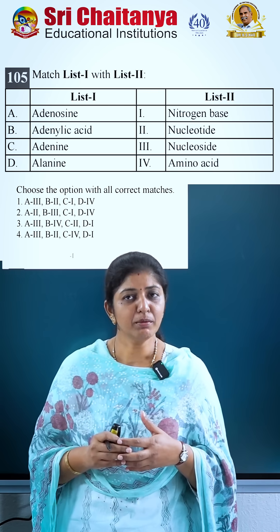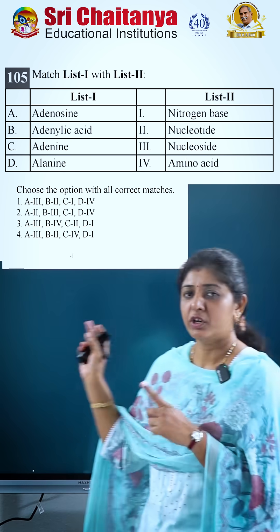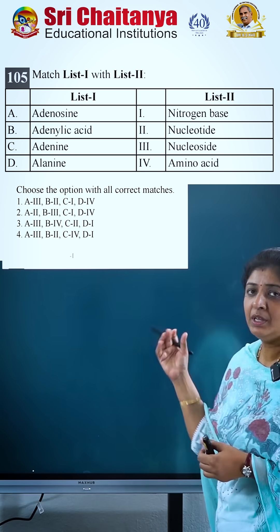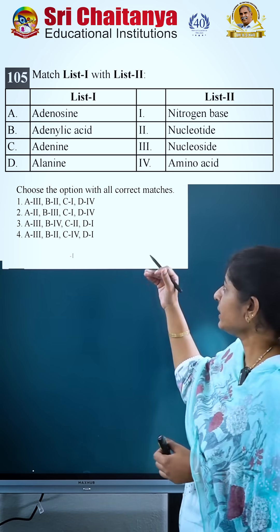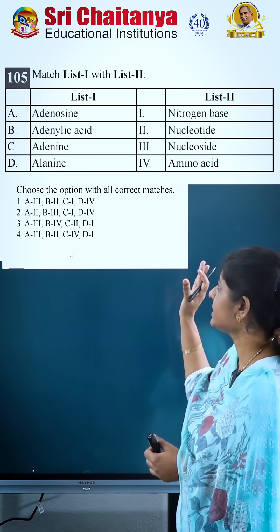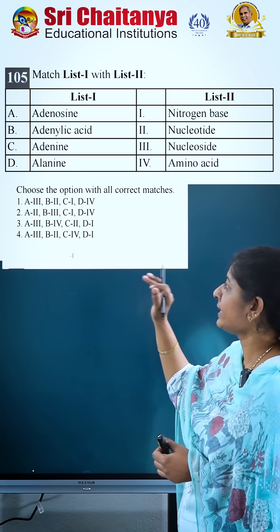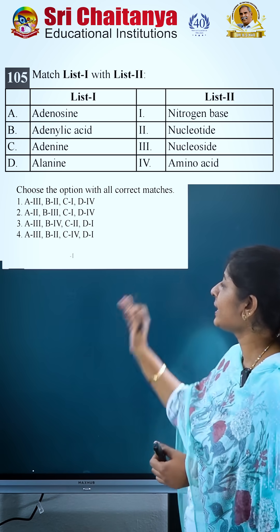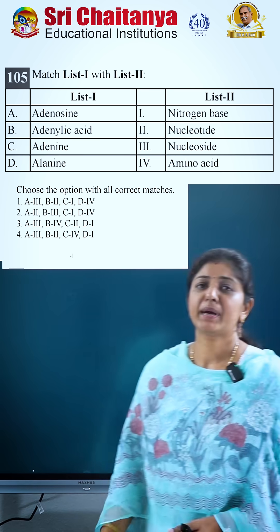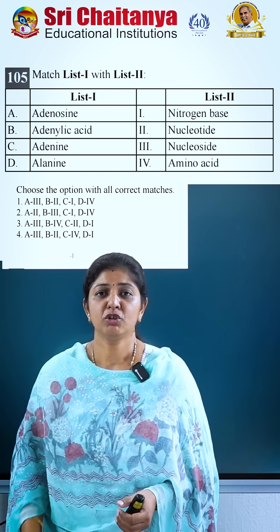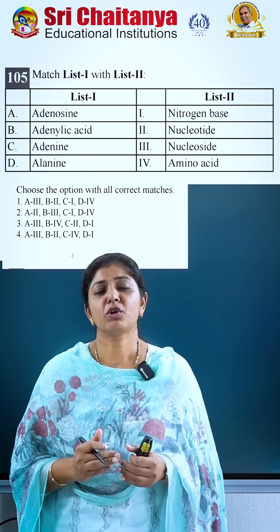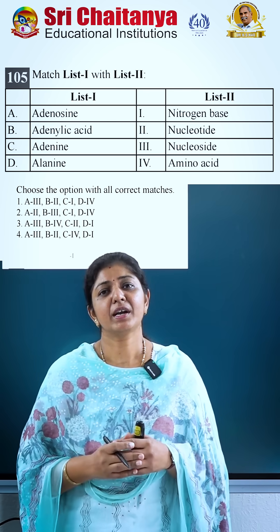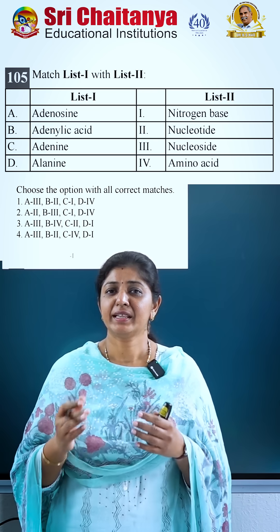Right now for this short example: adenosine is a nucleoside; adenylic acid is a nucleotide; adenine is a nitrogen base; alanine is an amino acid. This kind of terminology distinction can extend to other terms as well.